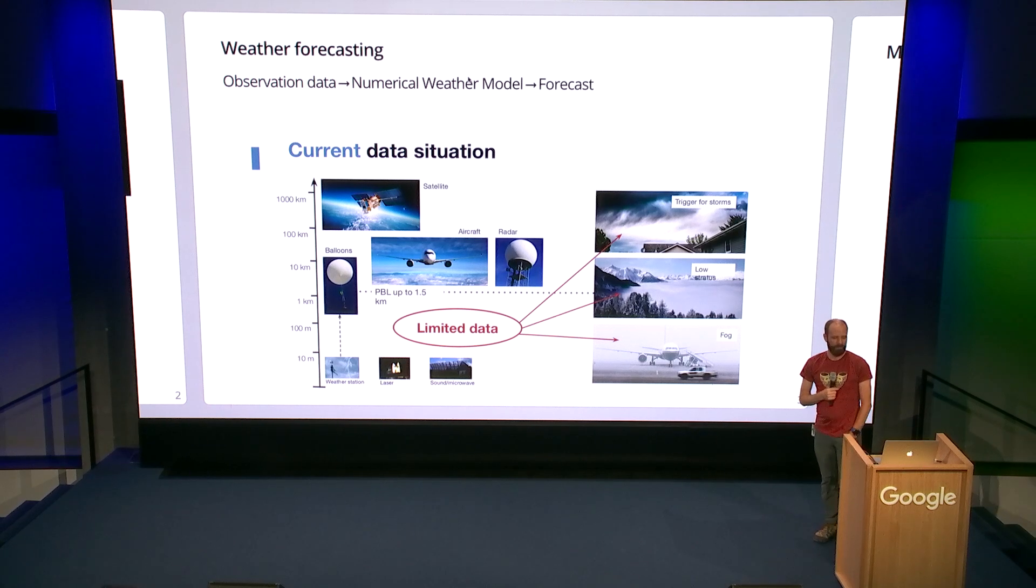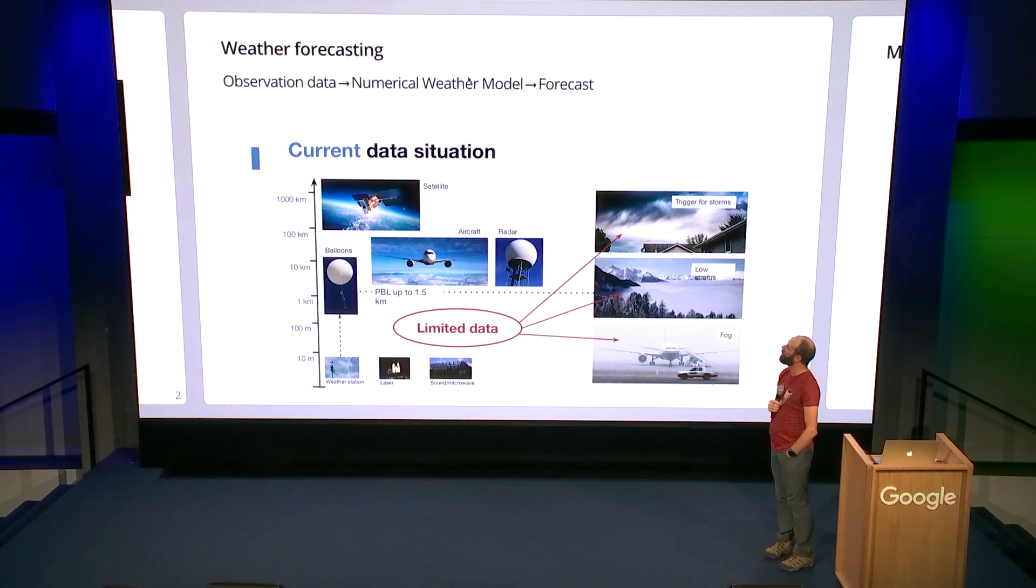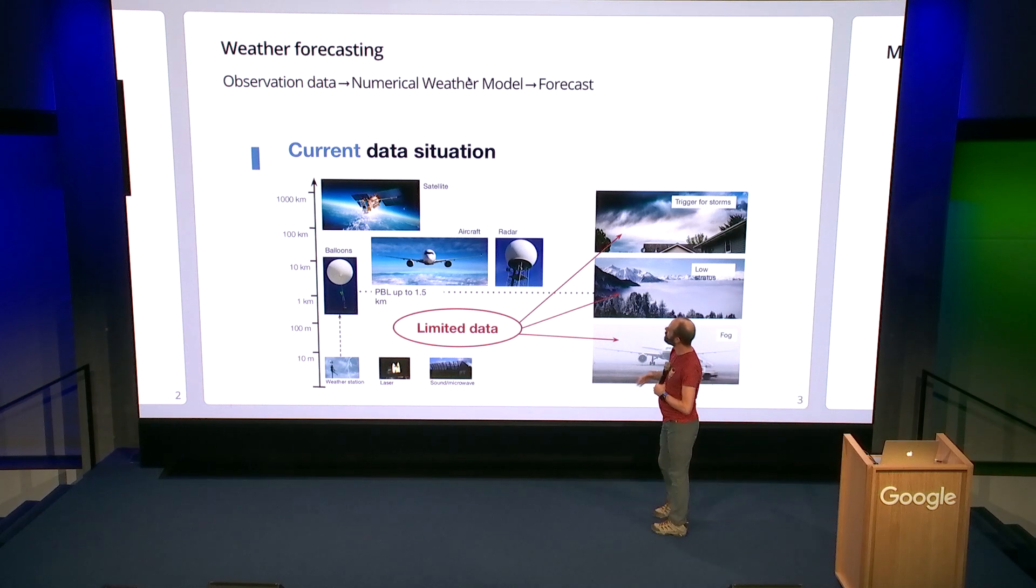They do weather forecasting. How does weather forecasting work? You get some observation data, you feed it into your numerical weather model, and out pops your forecast. Where you get the data from really makes a big difference in the quality of your forecast. There's all sorts of ways in which you gather weather information at the moment. What's particularly tricky is what's called the physical boundary layer, which is stuff from ground level up to about 1500 meters.